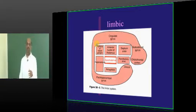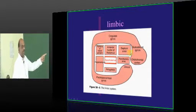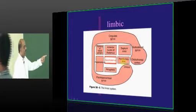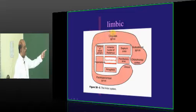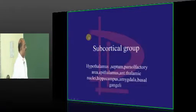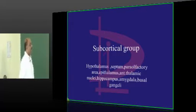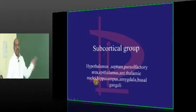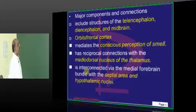Another way of looking at the limbic system: it includes the anterior nuclei of the thalamus, the septum and a portion of basal ganglia, the hypothalamus, amygdala, and para-olfactory area. Encircling these are the parahippocampal gyrus, cingulate gyrus, subcallosal gyrus, and orbitofrontal cortex. The subcortical structures associated with the limbic system include the hypothalamus, septum, anterior thalamic nuclei, hippocampus, amygdala, and basal ganglia.